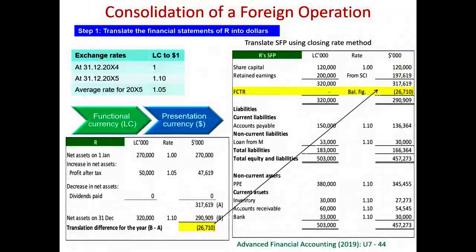After we translate the income statement and the statement of retained earnings, we translate the balance sheet — the statement of financial position. We are still using the closing rate method. Therefore, all assets and liabilities should be translated using the closing rate. At the year end, 31st of December 2005, the closing rate is 1.1 LC to $1, so all figures should be divided by 1.1. For example, 380,000 divided by 1.1 equals 345,455.